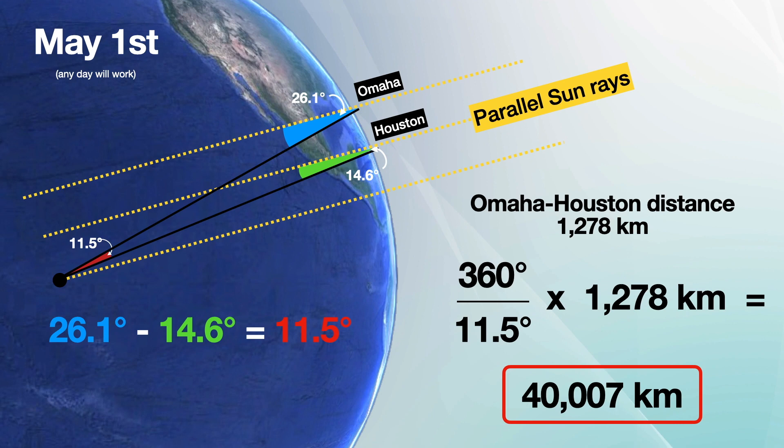By dividing 360 by 11.5 and then multiplying by 1,278, you would get 40,007 kilometers, quite close to earth's actual polar circumference.